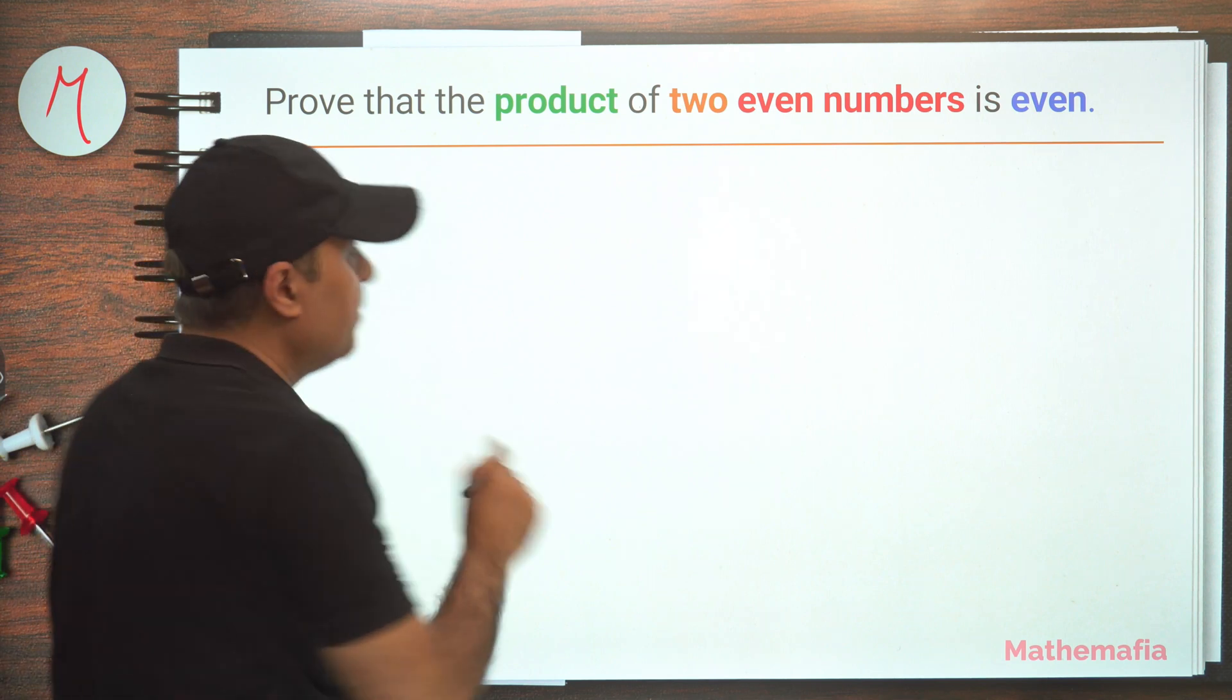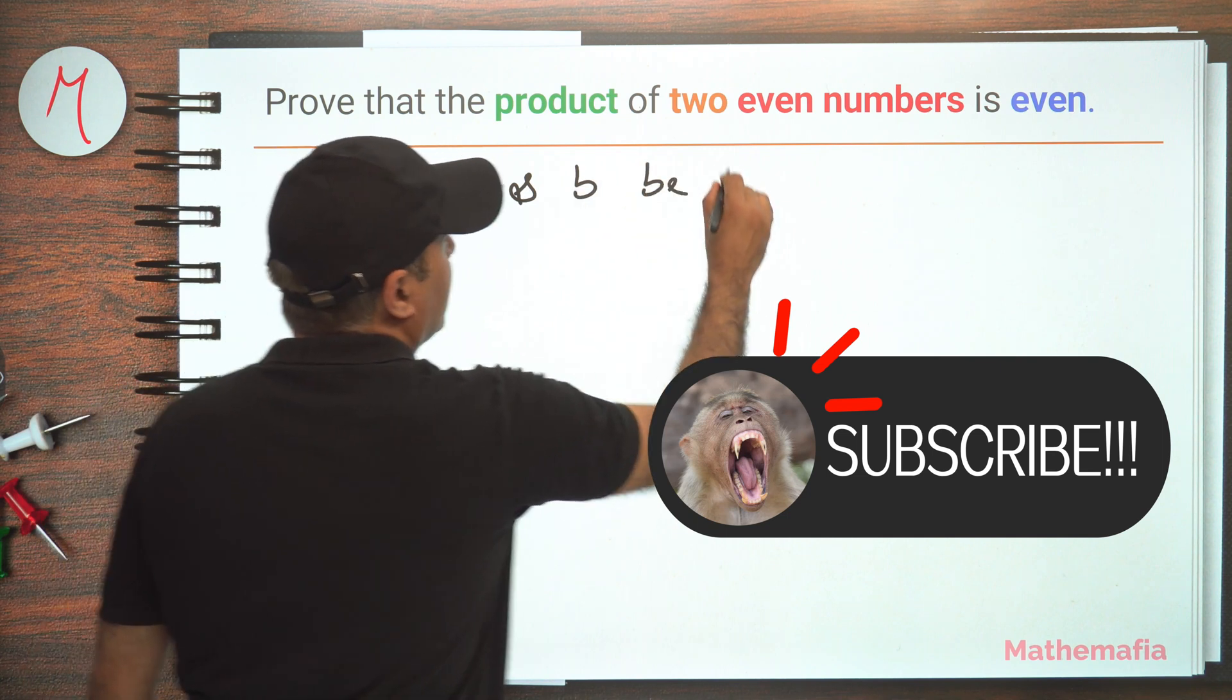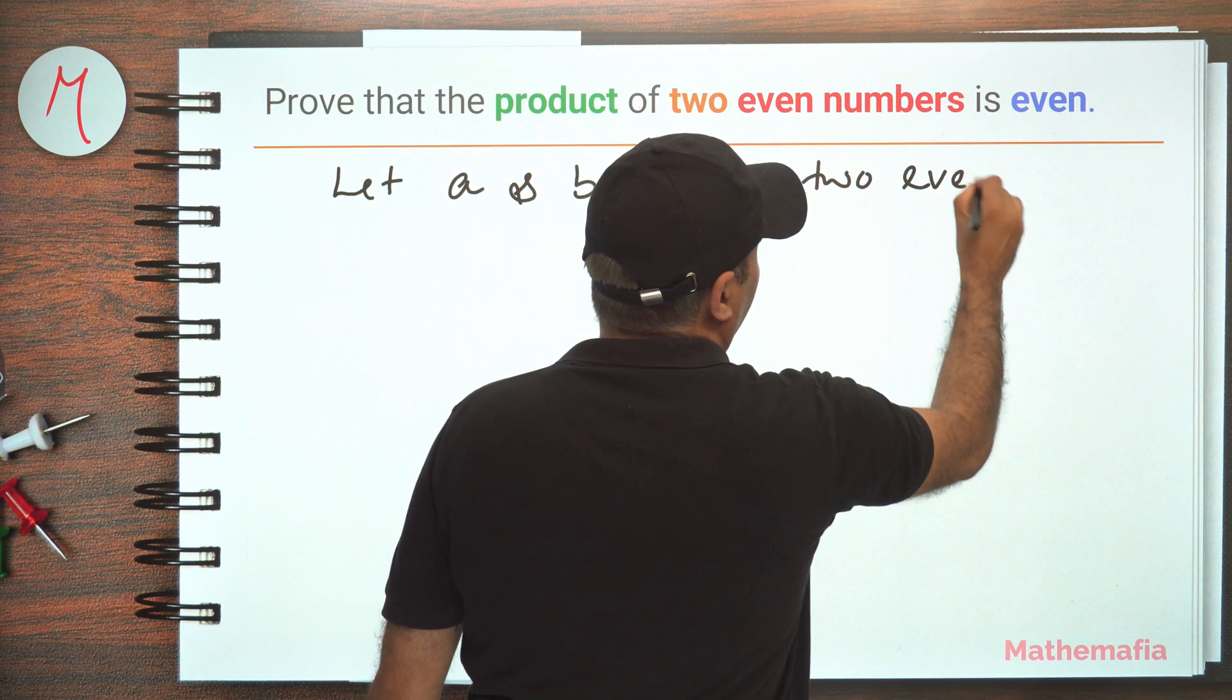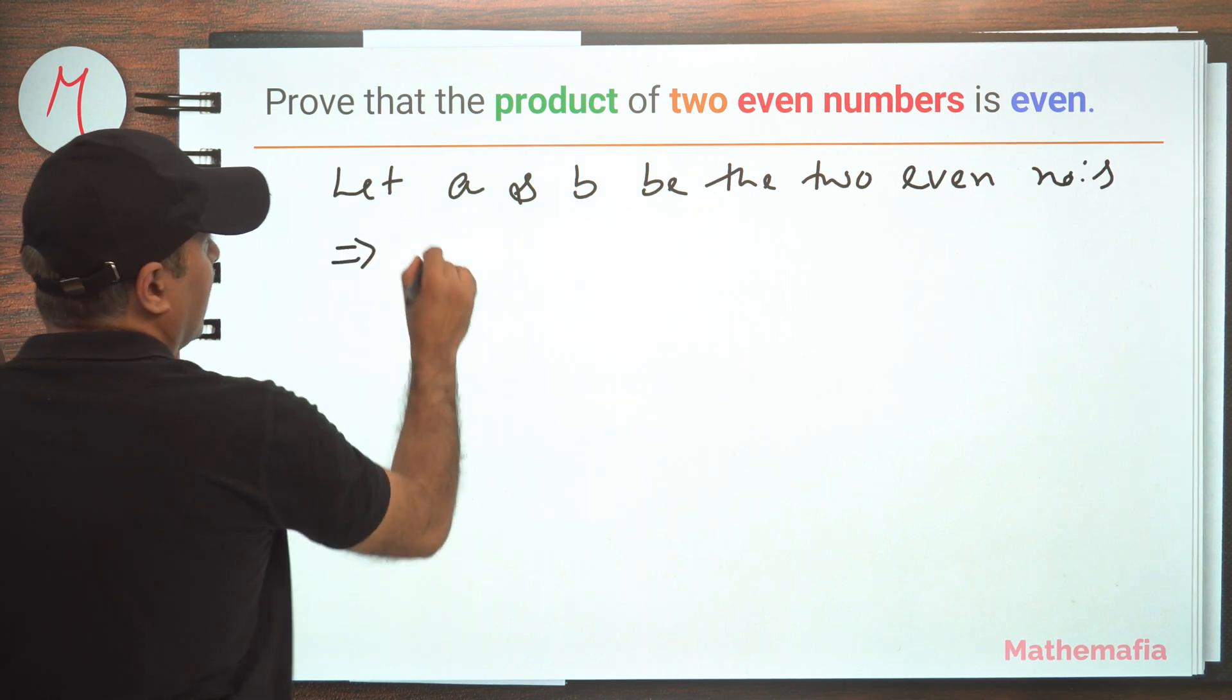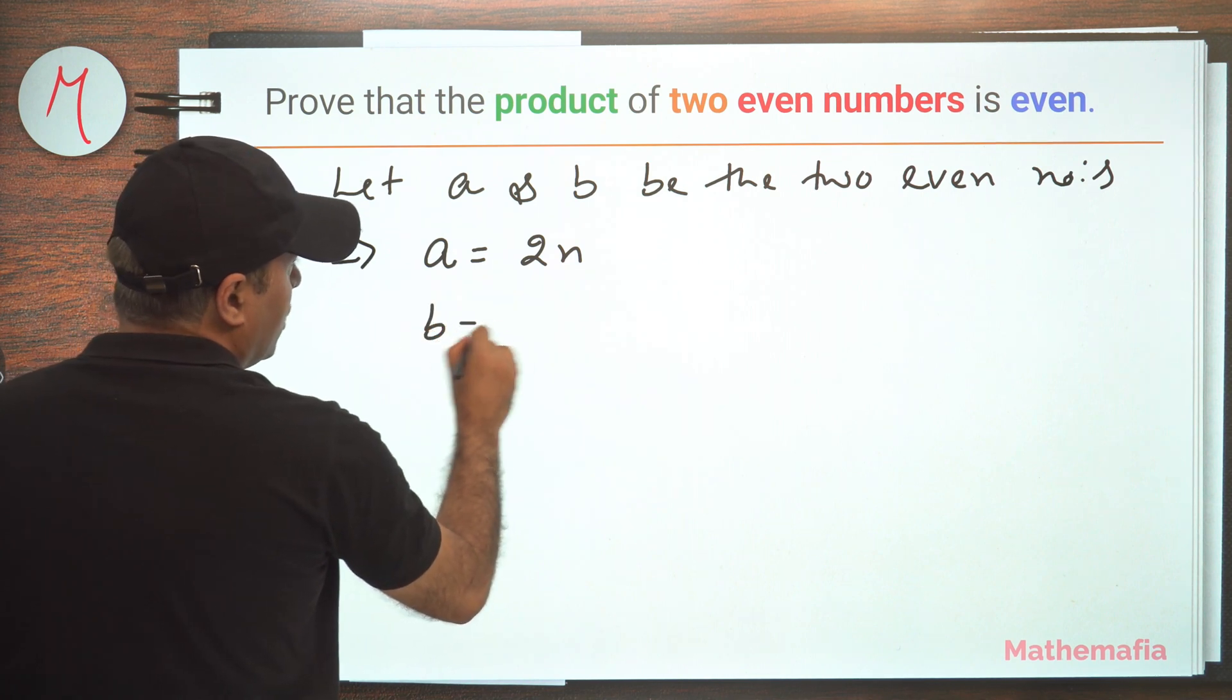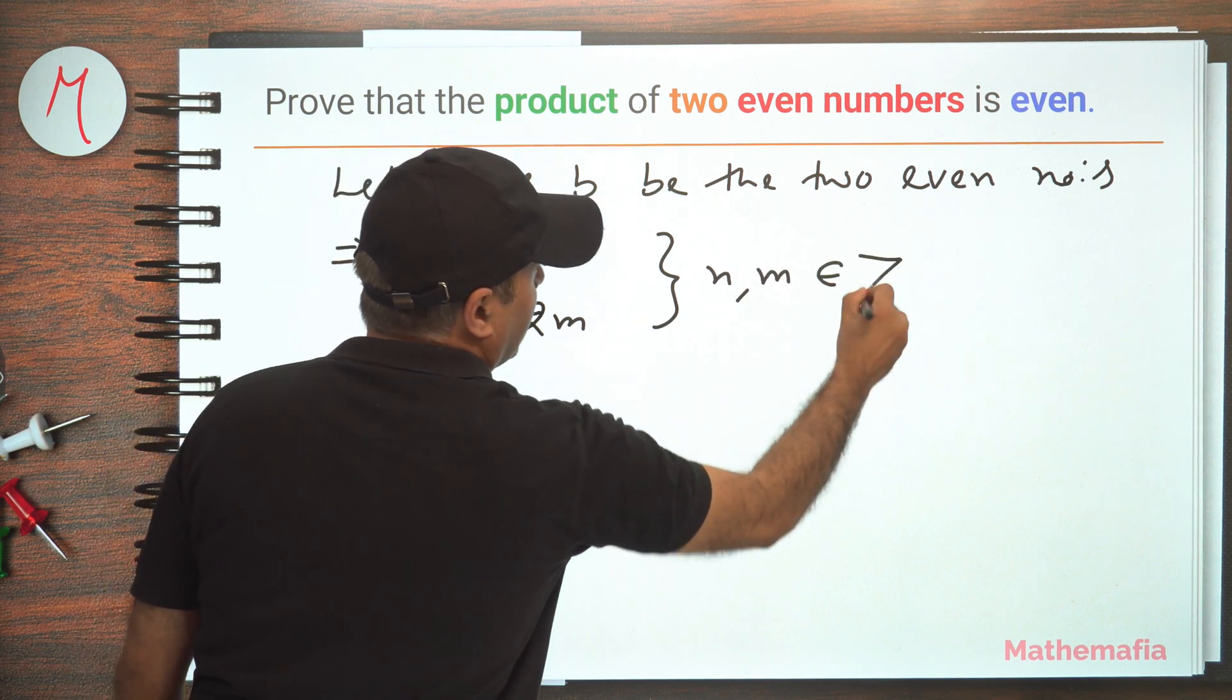Let a and b be the two even numbers. If a and b are two even numbers, then I can write a as 2n and b can be written as 2m, where both n and m are integers.